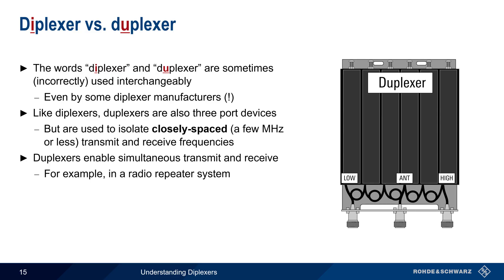Unlike the relatively wide high-pass and low-pass filters used in diplexers, duplexers are built using much narrower bandpass filters and even narrower notch filters.